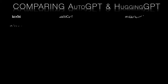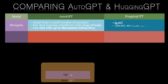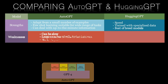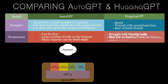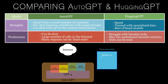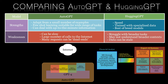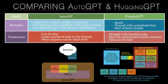Auto-GPT's strength lies in its ability to adapt and learn from a few examples. Its few-shot learning capabilities make it suitable for a wide range of tasks. However, this approach can sometimes be slow, as it requires searching the internet for relevant information to use in its learning process. On the other hand, Hugging-GPT's strength is its speed and specialised expert models, which can quickly perform tasks within their domain. The downside of Hugging-GPT is that it can be less flexible and less up-to-date compared with Auto-GPT.